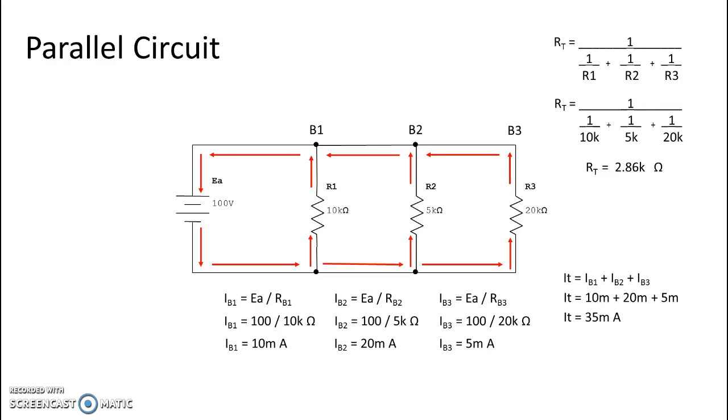Now we can do it also using Ohm's law. We have already figured out total resistance up here, which is 2.86k. So Ohm's law is voltage divided by resistance equals current, and if I take my 100 and divide it by 2.86k ohms, I find that my total current also comes out to 35 milliamps. So you can see from that that it doesn't matter which way you get to total current, they will both get you the correct answer.